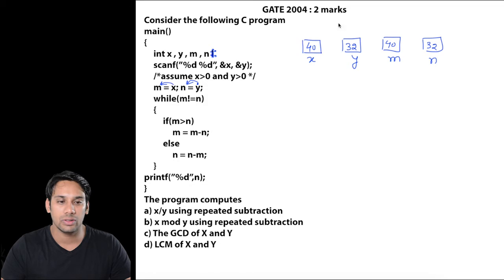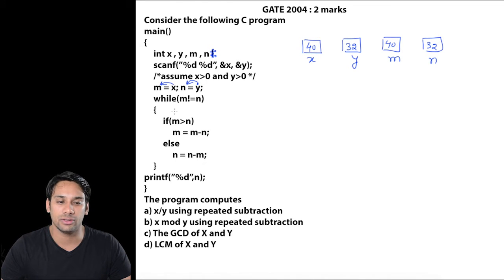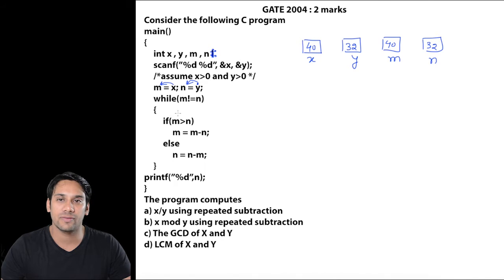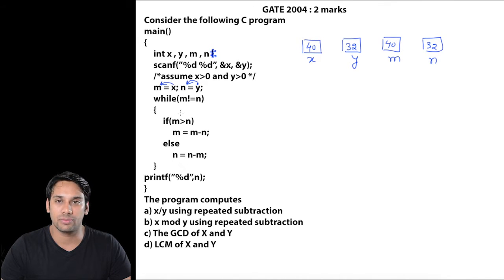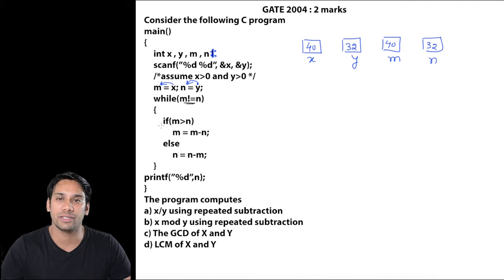Now they are saying in the while loop: while m is not equal to n, this while loop will run till the time the value of m is not equal to n. As soon as the values of m and n are equal, this while loop will terminate and the control will pass to the next statement. So here the value of m is 40 and the value of n is 32, and 40 is not equal to 32, therefore this condition passes so we are going to come inside this while loop.